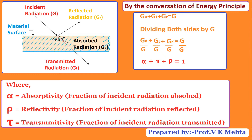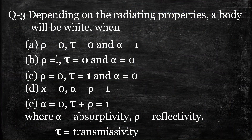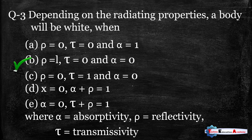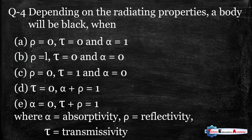We know alpha plus tau plus rho equals one. A white body reflects the heat while a black body absorbs the heat. A white body reflects all the heat, so its reflectivity rho equals one, transmissivity tau equals zero, and absorptivity alpha equals zero. A white body does not allow radiation to be transmitted or absorbed — it reflects all radiation falling on its surface. So rho equals one, tau equals zero, alpha equals zero. The right answer is option B.